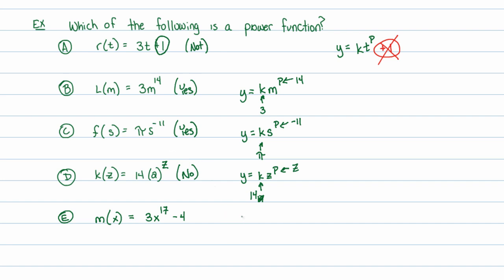Finally, the last one m(x) = 3x^17 - 4: is it of the form y equals some number times the variable raised to a power? We have a number — 3 — and a power — 17 — but we also have this additional minus 4 at the end, which is not what we want. So this is also not a power function.